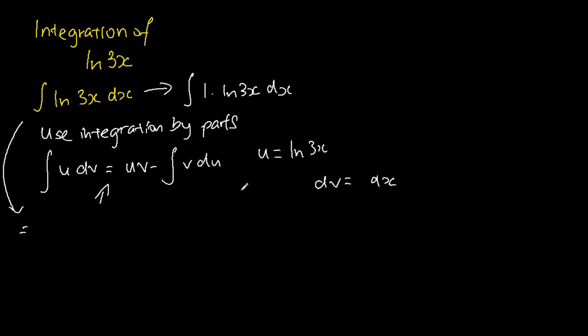Next, to find what is du, we differentiate u with respect to x. This gives us 3 over 3x, which is 1 over x. Multiplying both sides by dx, we will get du is equal to 1 over x dx.